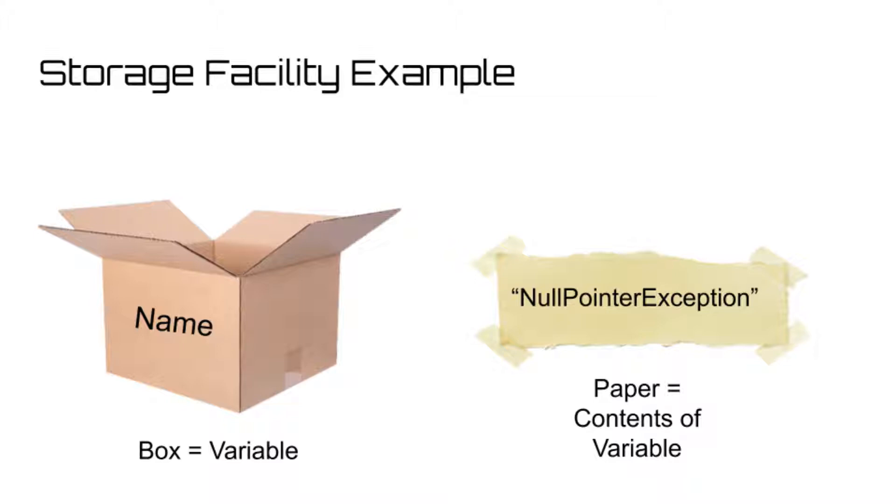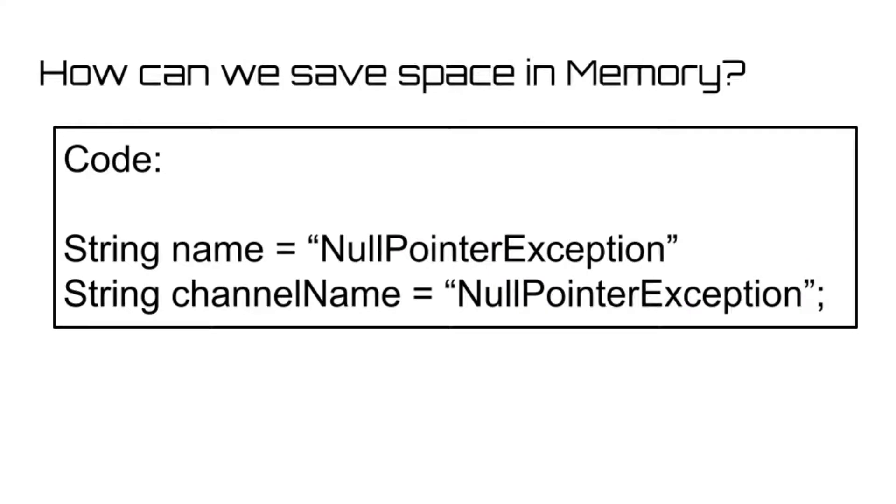Programming languages allow us to do some pretty cool things with these boxes that we've created. For example, let's say we created a second variable, channel name, and instead of setting it equal to null pointer exception, we instead set it equal to our already created name variable.